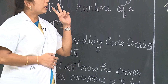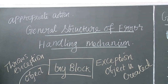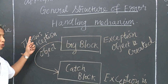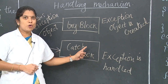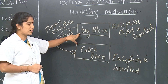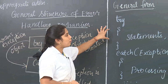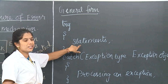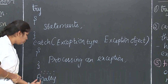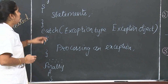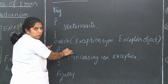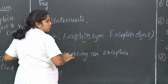Basically there are two blocks: a try block and a catch block. The try block is used to create the exception object, after which it throws to the catch block. The general structure of exception handling uses try with some statements, followed by catch with an exception type and exception object, and finally we have the finally block.